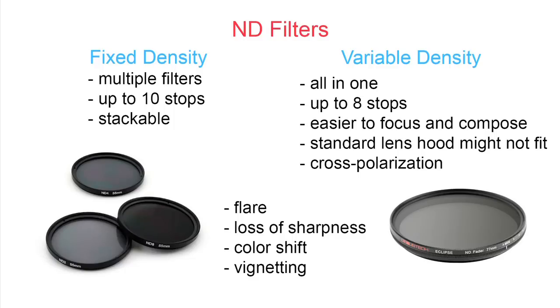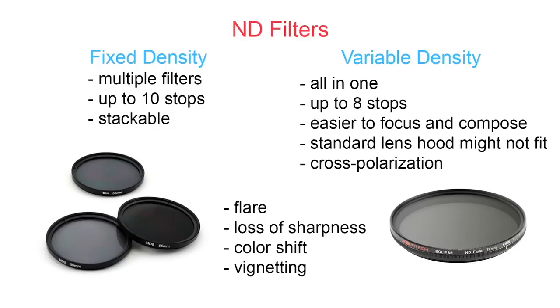Another problem that might occur with variable density filters is cross-polarization. Cross-polarization usually occurs at the darker end of the variable filter, and in the photo it looks like the darkness is uneven — you get dark and light patches in the image, like this example. This image is a complete disaster: it's got flares, color shift, and cross-polarization. Remember that all ND filters are not made equal — different brands produce different quality, which will of course influence your image quality.